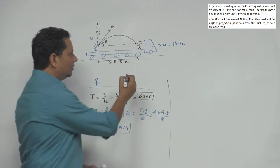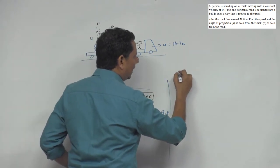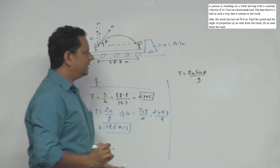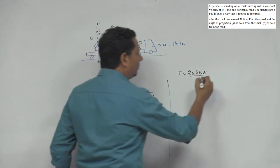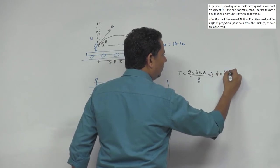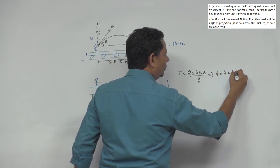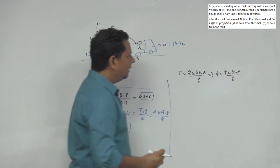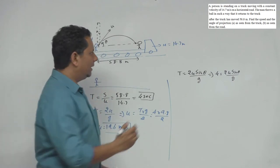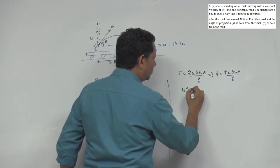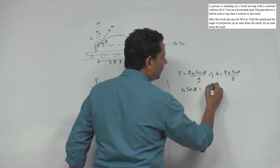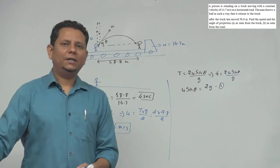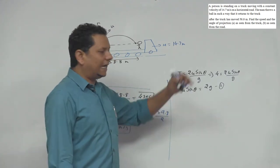When we look at the ground frame, we can write the total time: T equals 2u sin theta divided by g. This implies 4 equals 2u sin theta divided by g. From this equation, u sin theta equals 2g, which equals 2 multiplied by 9.8, giving u sin theta equal to 19.6. This is equation number 1.